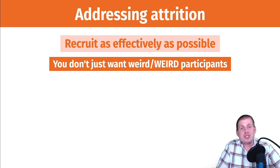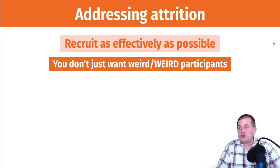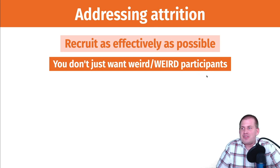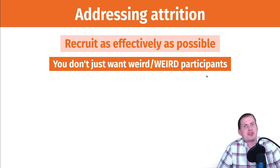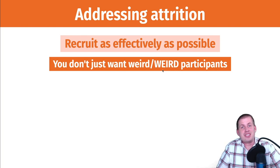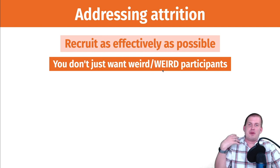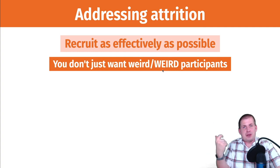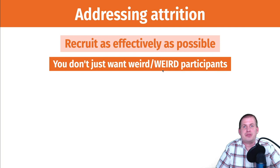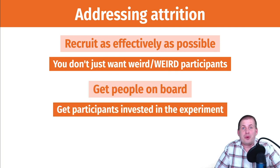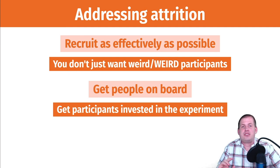To fix attrition, recruit as effectively as possible. You don't want just one segment of the population, especially if there are things that might cause people to leave the study. You want a diverse segment — avoid the WEIRD problem (Western, Educated, Industrialized, Rich, Democratic countries). You don't want only Harvard undergrads in your RCT because the results won't be generalizable. If there's something systematic about that group, they'll all drop out for the same reason. Aim for a wider swath of the population.